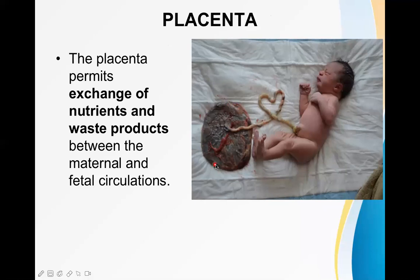This rounded structure is the placenta. The umbilical cord is attached to the surface of the placenta — one end is attached to the umbilicus of the baby, and the other end is attached to the placenta, which itself is attached to the endometrium of the uterus. This is the connection between mother and baby inside the uterus during pregnancy.